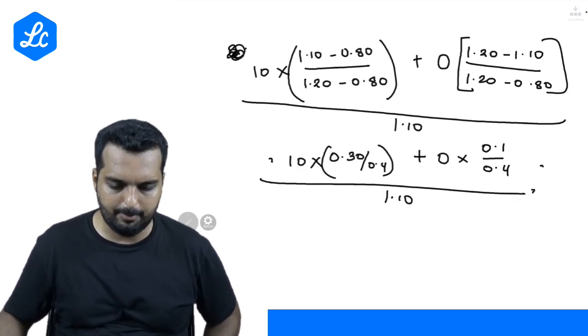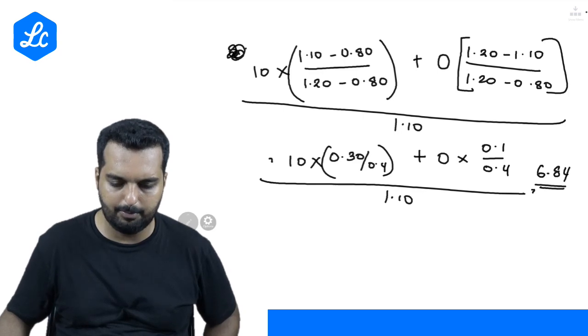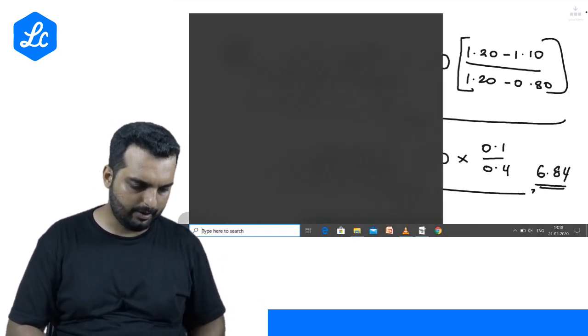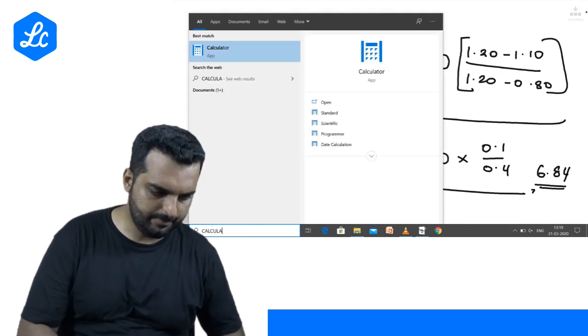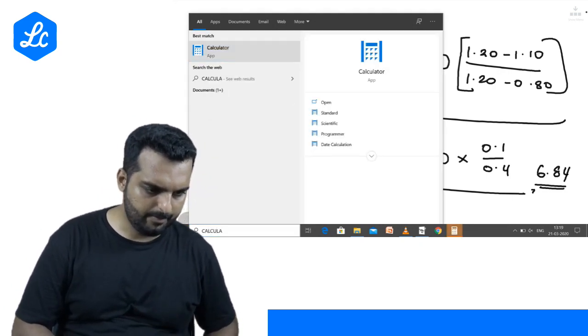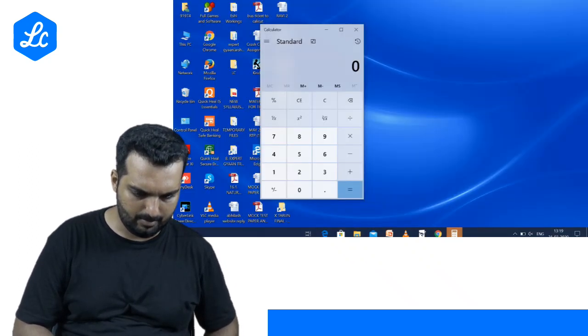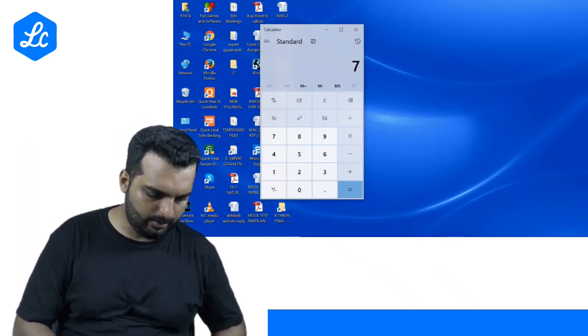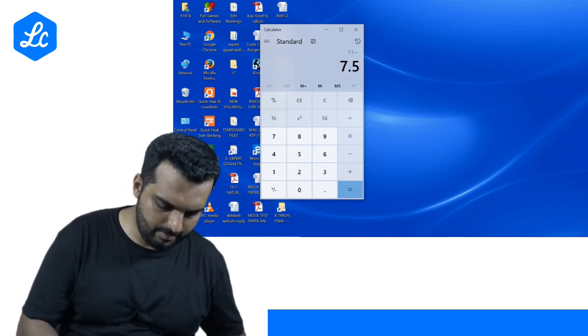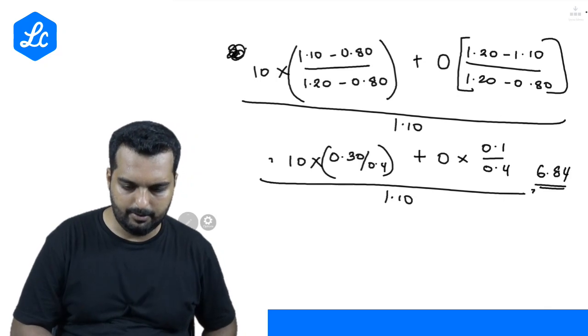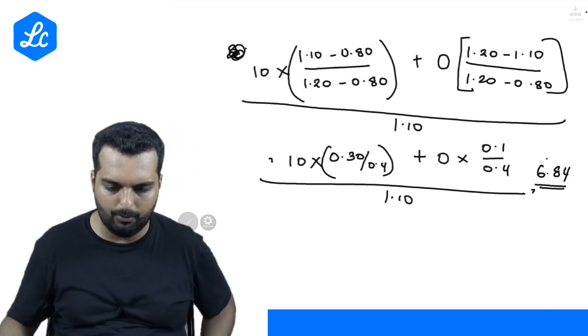So that will be 7.5, that will be 6.84. Let's just cross check with the calculator. Yes, it is going to be 7.5 divided by 1.1, 6.81. So this is going to be 6.81.